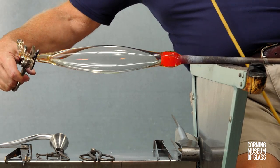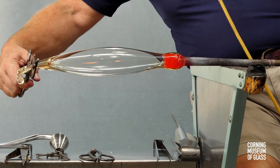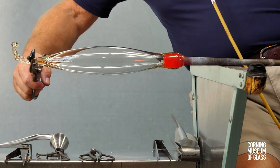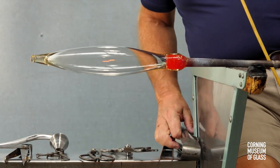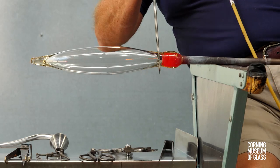Blowing continues while pulling continues, and with the jacks, a narrow constriction is made near the blowpipe.